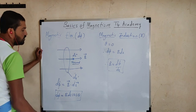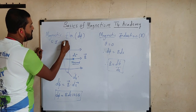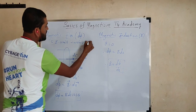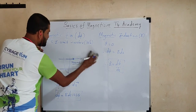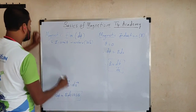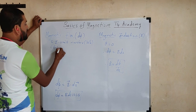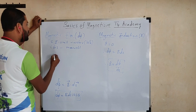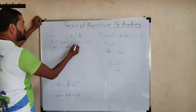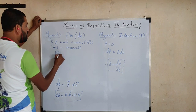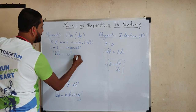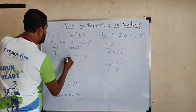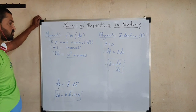The SI unit of magnetic flux is Weber, spelled W-E-B-E-R — named after a scientist, written as capital W small b. It also has a CGS unit: the CGS unit of magnetic flux is Maxwell. The conversion factor: Weber is the larger unit and Maxwell is the smaller unit. 1 Weber is equal to 10 raised to 8 Maxwell. This is a very important concept.